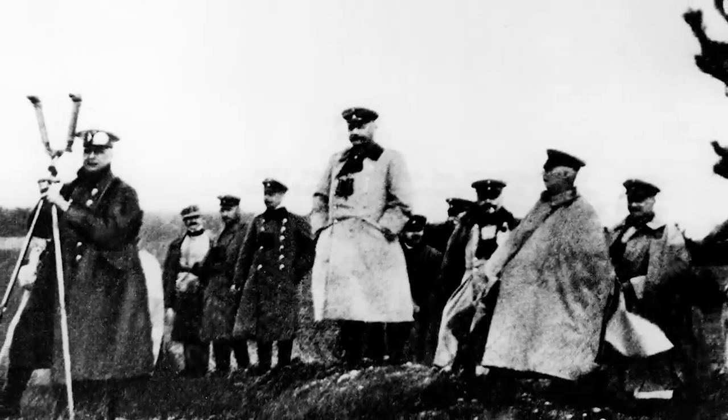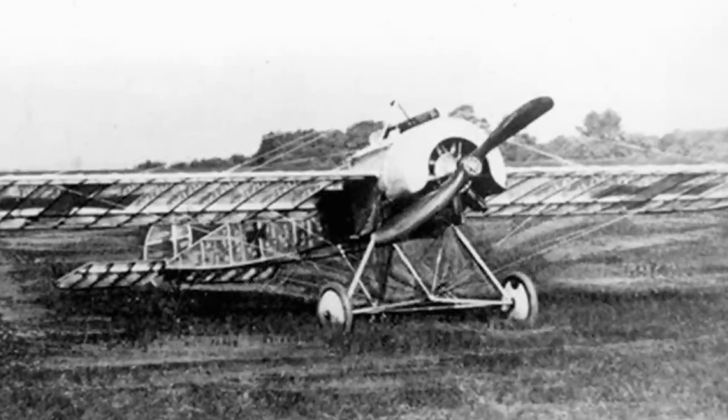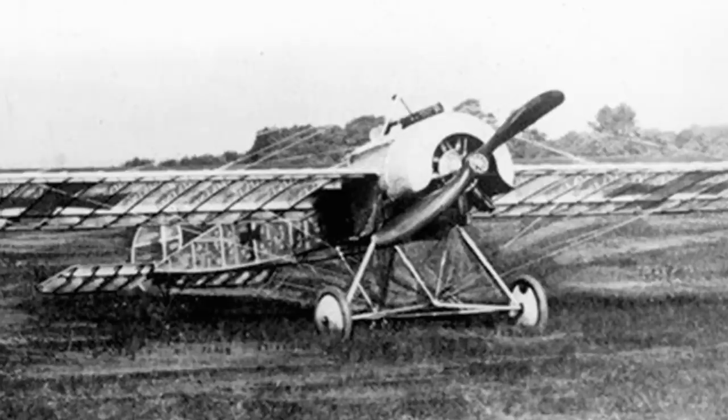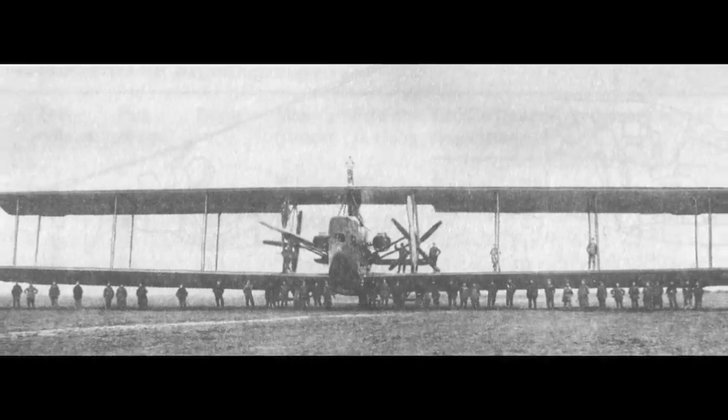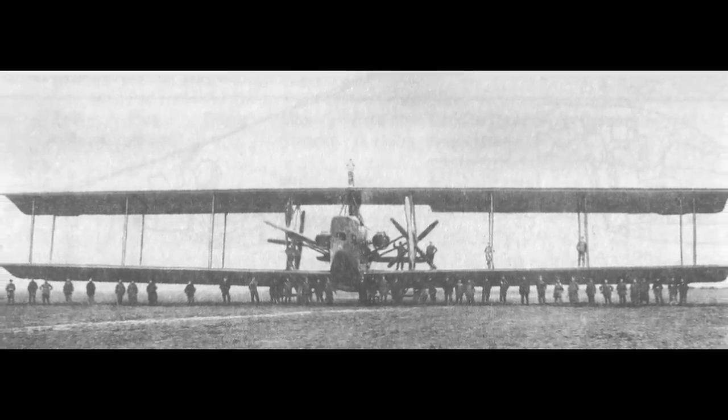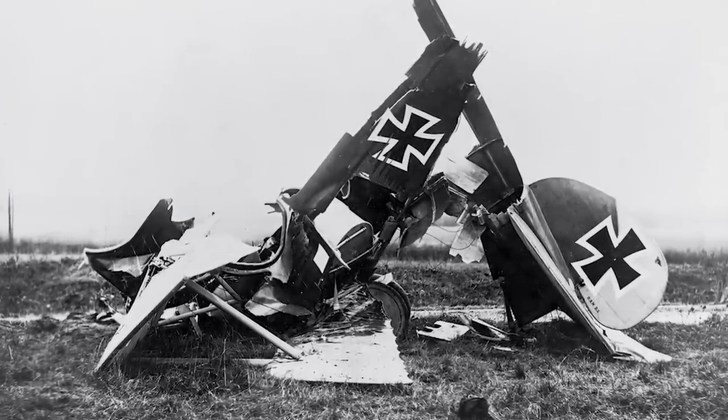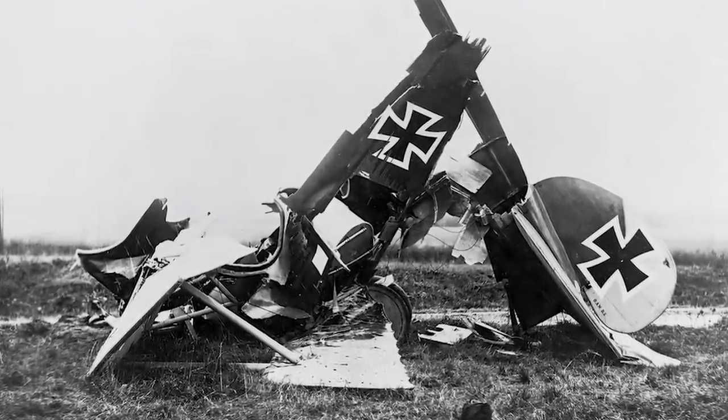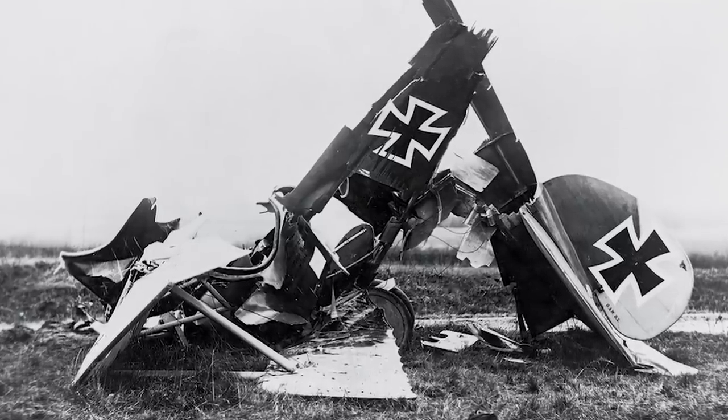Stealth technology can be traced all the way back to World War I when the Germans experimented with the use of translucent cellulose acetate, a transparent covering material to attempt to reduce the visibility of military aircraft. However, this never ended up working out too well and instead made sunlight reflecting off the aircraft even more visible and the idea was ultimately scrapped.